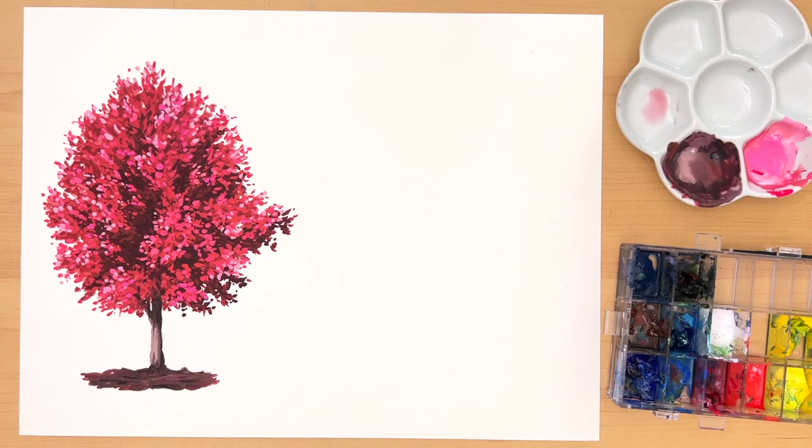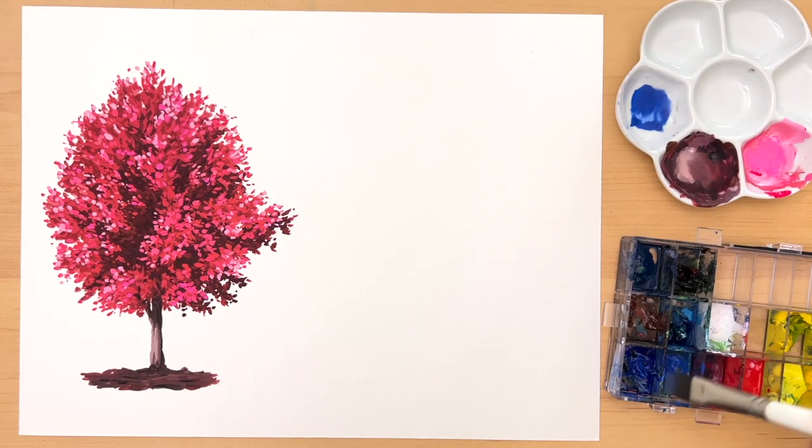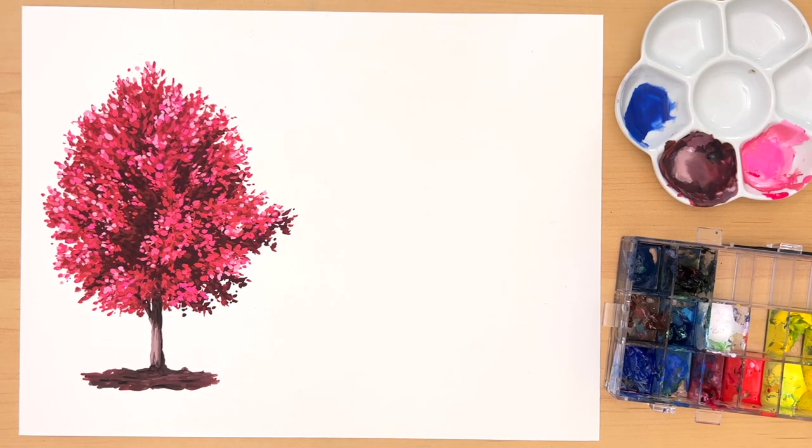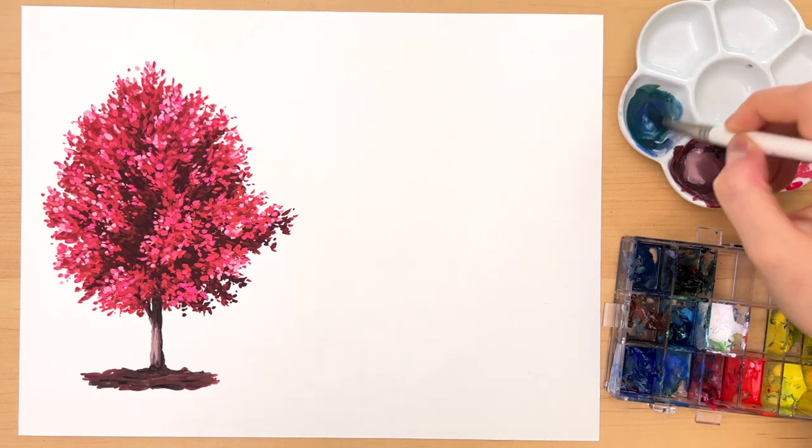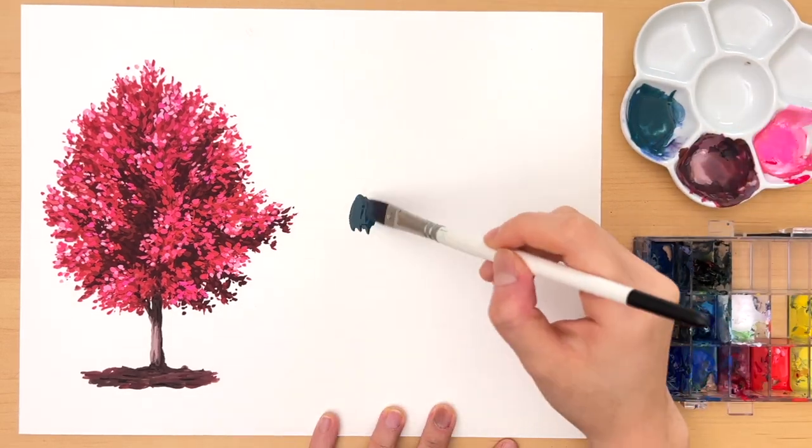And that's our first tree. You can use this method to paint pretty much any tree you want. As an example, I'm going to paint this willow tree using the same method.